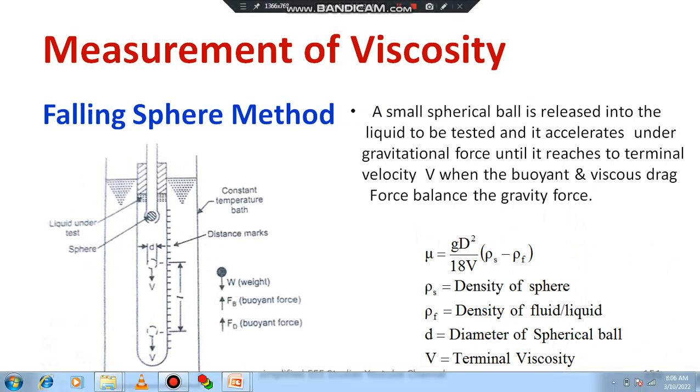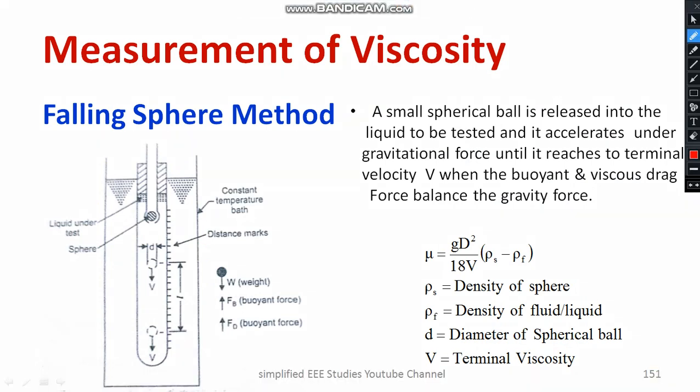Let us discuss another method: the falling sphere method. In this method, a small spherical ball is released into the liquid to be tested. The liquid is kept inside a particular tube. You release the sphere from the top to the bottom. In the surrounding area, you can see a constant temperature bath — it is set up like a test tube with a temperature bath around it.